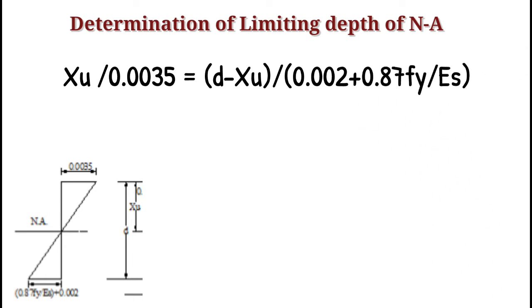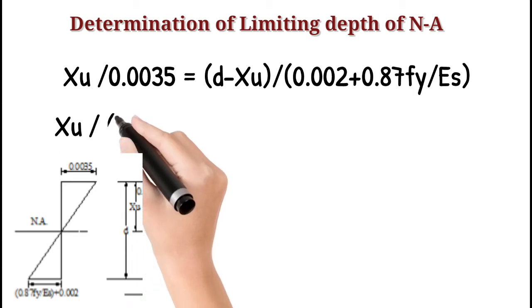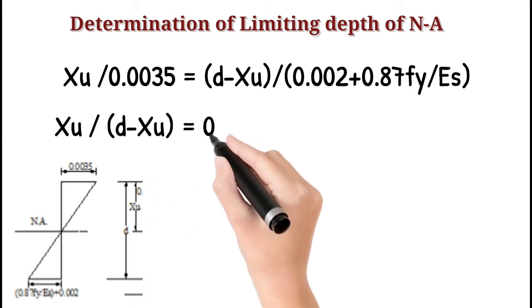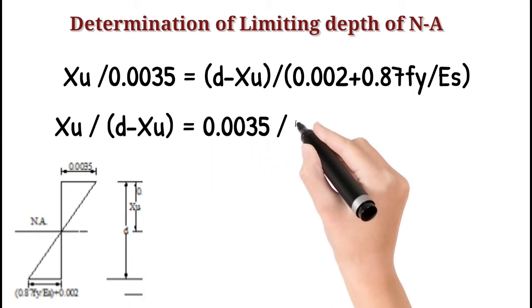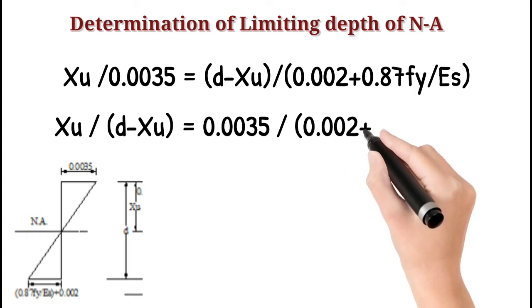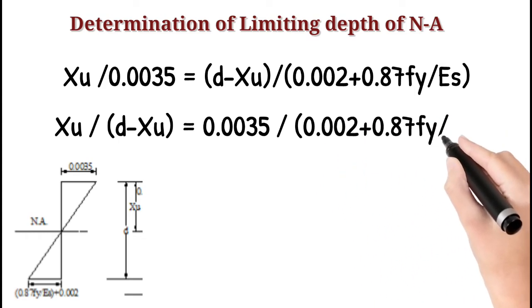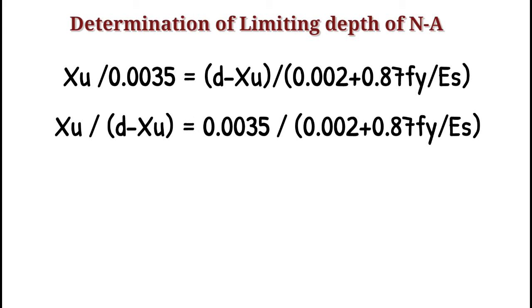The ratio of Xu to the 0.0035 strain at extreme compression fiber equals to d minus Xu distance to the strain at level of tensile reinforcement, that is 0.002 plus 0.87 fy divided by Es.